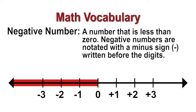Negative numbers are numbers that are less than zero. Negative numbers are notated with a minus sign written before the digits, and they go on forever to the left. The plus and minus signs in these cases don't mean addition and subtraction — they indicate a positive or negative value. Notice that the farther to the right you go on a number line, the larger the number, and the farther left you go, the smaller the number.